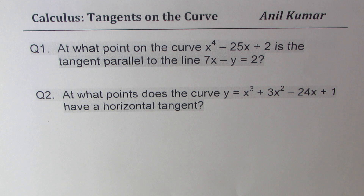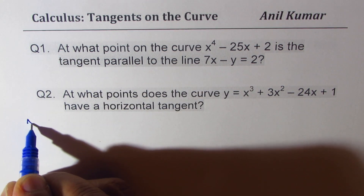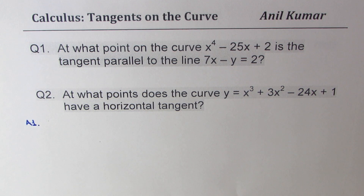Question number two is: at what points does the curve y equals to x cubed plus 3x squared minus 24x plus 1 have a horizontal tangent? Let's do a solution of question number one. You can always pause the video, answer the question, and then look into my suggestions.